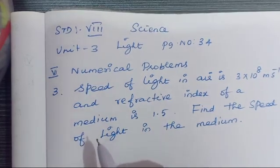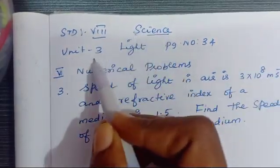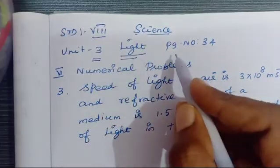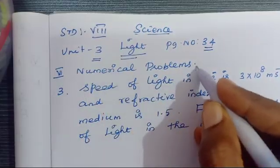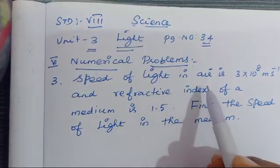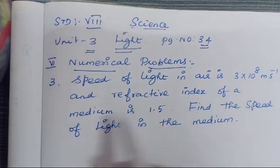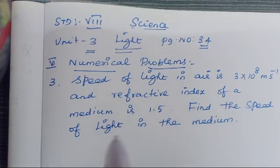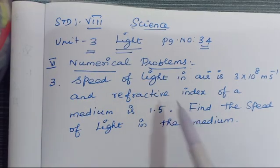Hello students. In this video we are going to learn about Standard 8th Science, Unit Number 3, Light. It is on page number 34, Roman numeral 6, numerical problems, problem number 3. The problem is: the speed of light in air is 3 into 10 power 8 meter per second, and the refractive index of a medium is 1.5.